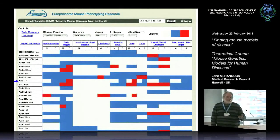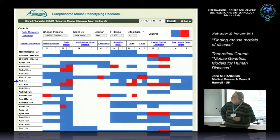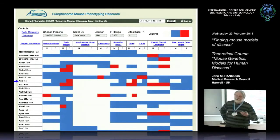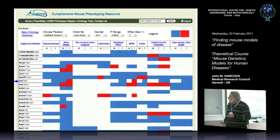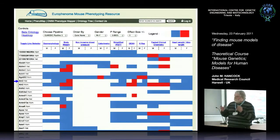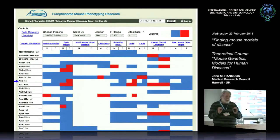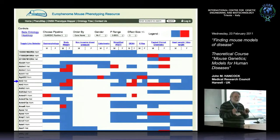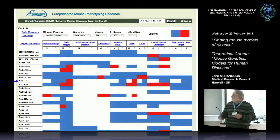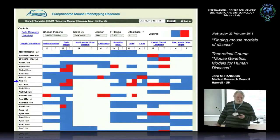The annotation is done computationally. We've set two different thresholds: a P-value - how unlikely is that result by chance - and an effect size, which can be two or three standard deviations. You can choose because sometimes you see very significant differences which are very small, and people may not be interested in small differences even if they're highly significant. So we allow people to restrict what they see - the more stringent the parameters, the less you see. We think this is quite a nice representation.